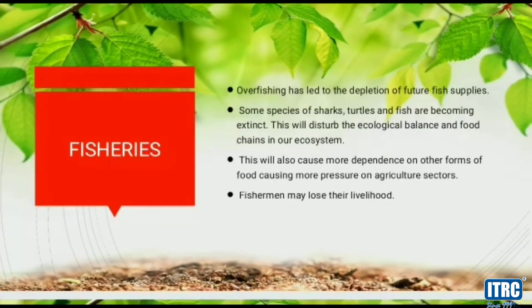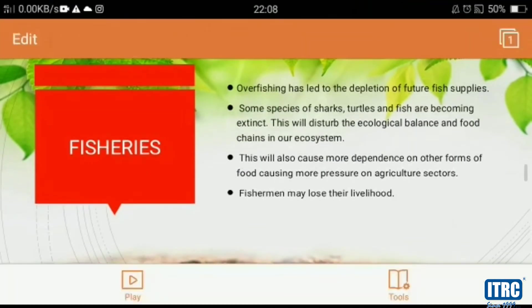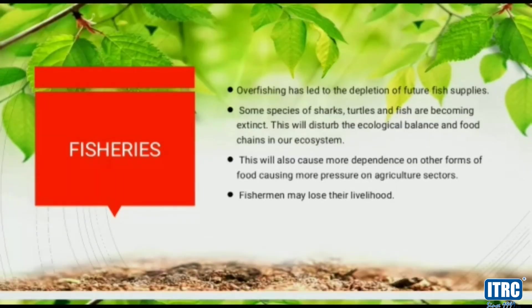The next sector is fisheries. Overfishing has led to the depletion of future fish supplies. Some species of sharks, turtles and fish are becoming extinct, which will disturb the ecological balance and food chains in our ecosystem. This will also cause more dependence on other forms of food, putting more pressure on the agriculture sector, and fishermen may lose their livelihood. We can avoid overfishing by promoting sustainable fishing practices, which control fishing and provide enough time for fish to breed and multiply. Eat fish only when they are plentifully available and in season, not during breeding season.